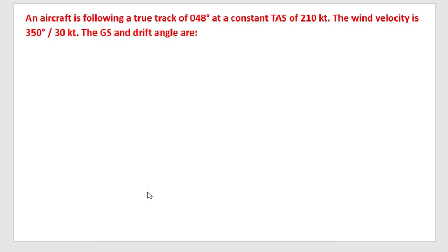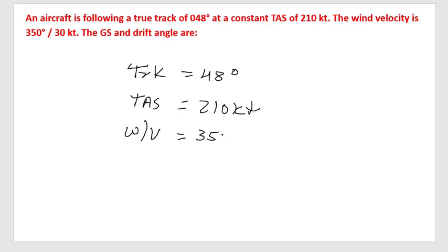Let us first write down the data associated with the problem. We have track 048 degrees, TAS as 210 knots, and wind velocity equal to 350 degrees and 30 knots.